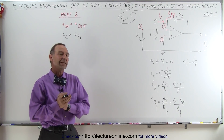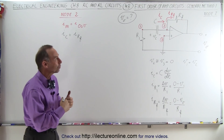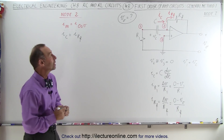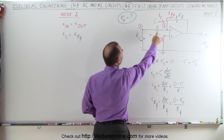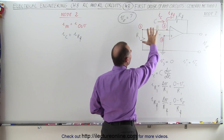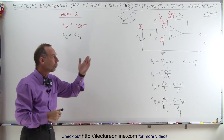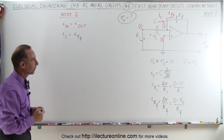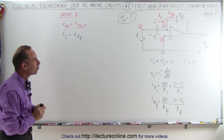Welcome to ElectronLine. Now let's take a look at node number 2, because what we're trying to do here is find the output voltage in terms of the initial voltage on the capacitor and the various values for the resistors, R1 and the feedback resistor. So what we're doing now is we're looking at node 2.